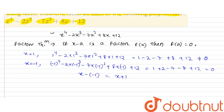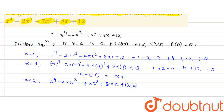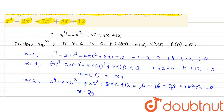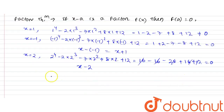Now I will take another value, x equal to 2. Putting x equal to 2: 2⁴ minus 2(2³) minus 7(2²) plus 8(2) plus 12 equals 16 minus 16 minus 28 plus 16 plus 12. The 16 minus 16 cancels and 28 minus 28 cancels, so the value is zero. Therefore x minus 2 is also a factor of this polynomial.